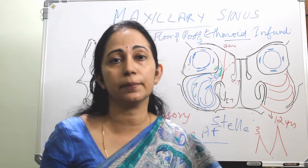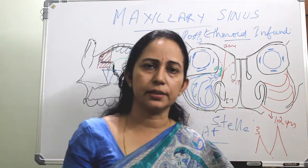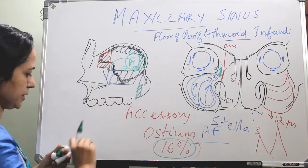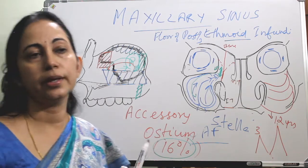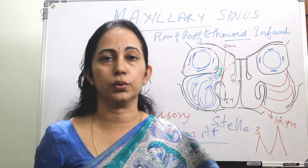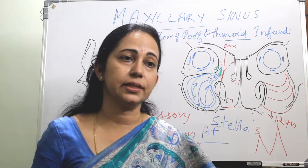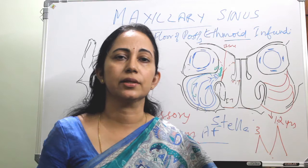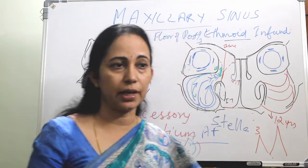During surgery, if you find an accessory ostium, you must combine it with the natural ostium into a single ostium — never leave the accessory ostium alone. When doing a diagnostic nasal endoscopy, if you see an ostium in a vertical orientation, that is always the accessory ostium. In most cases the natural ostium will not be seen on diagnostic nasal endoscopy.